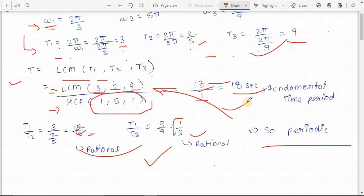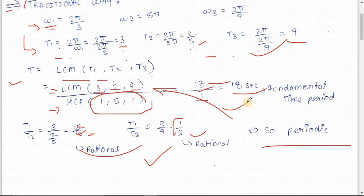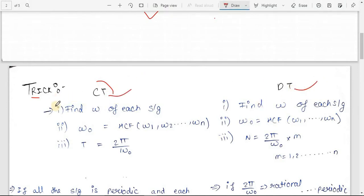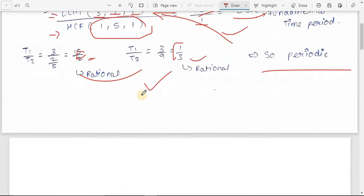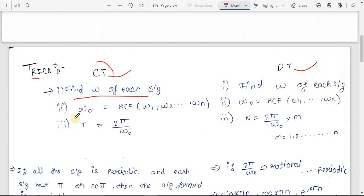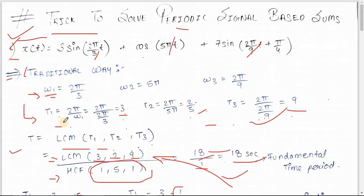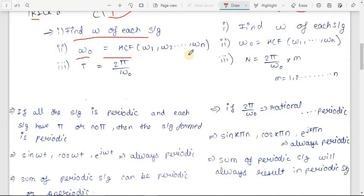That was the traditional way to find whether a signal is periodic and its fundamental time period. Now let's see the trick. To understand the trick, you should understand the concept first. We have two types of signals: continuous time and discrete time. In continuous time, first we find omega, then directly find the fundamental frequency.